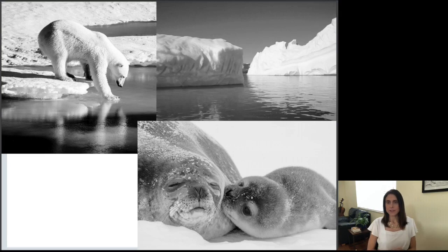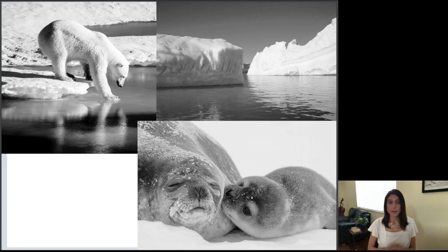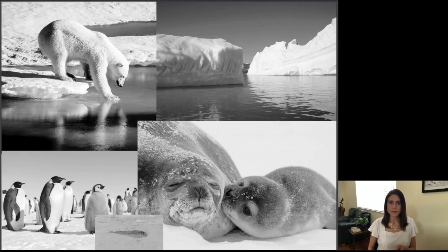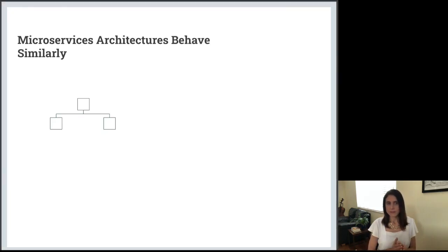As you may know, polar bears eat seals, so it's reasonably easy to understand that the population of polar bears has a strong relationship with the population of seals. As the climate changes, the habitat of polar bears and seals is changing as well, and predicting the impact on populations — and other animals on the food chain, such as penguins or krill — gets complicated quickly. I would make the case that in some ways, microservices architectures behave similarly.